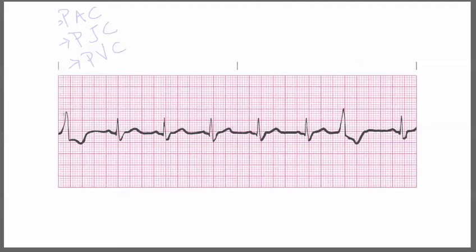As always, we're going to count our rate: 1, 2, 3, 4, 5, 6, 7, 8. We have a rate of 8 — 8 times 10 equals a heart rate of 80. So this person has a heart rate of 80.